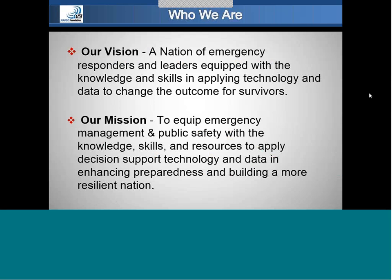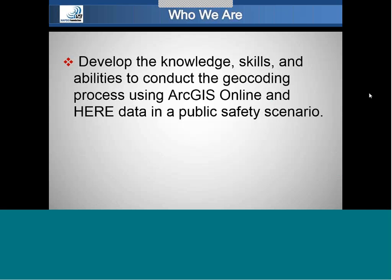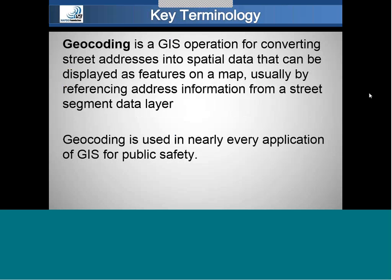We're here for you, here to benefit you, and if there's anything we can do to help make your job easier, we will do our best to facilitate that. The purpose of today is to develop your knowledge, skills, and ability — something that is a very fundamental aspect of GIS, which is geocoding. Geocoding is really converting street addresses into spatial data. It's the foundation of the map, and geocoding is a part of almost every application within GIS, certainly for public safety where locational information is so fundamentally important.